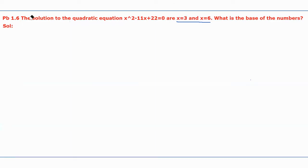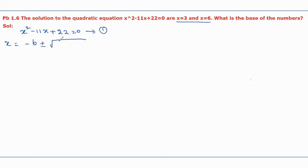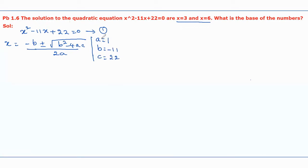To check the condition, let us rewrite the given equation: x squared minus 11x plus 22 equal to 0. This is equation number 1. We find the solutions using the formula x equal to minus b plus or minus square root of b squared minus 4ac, all divided by 2a, where a equals 1, b equals minus 11, and c equals 22.